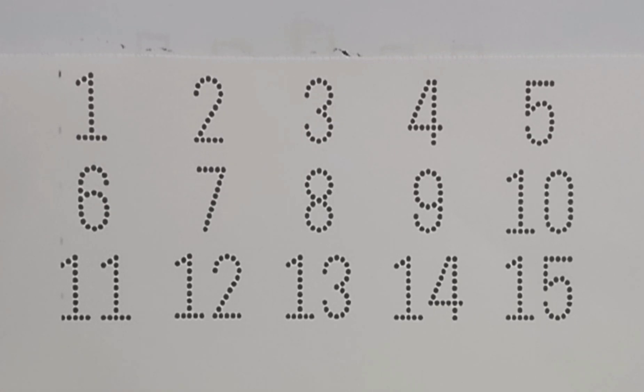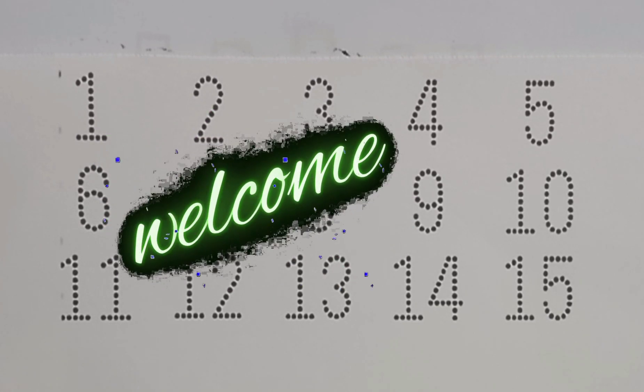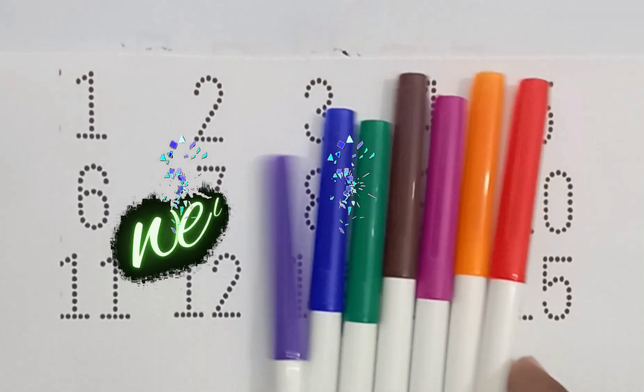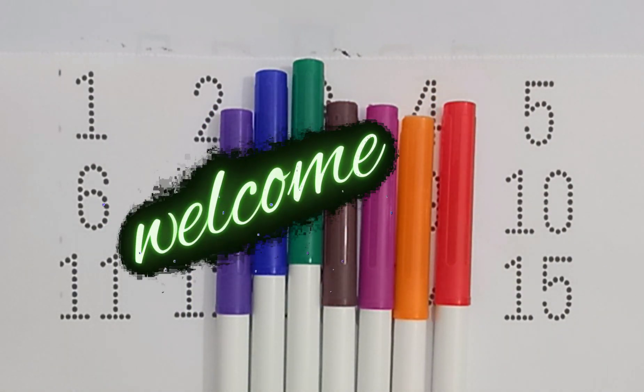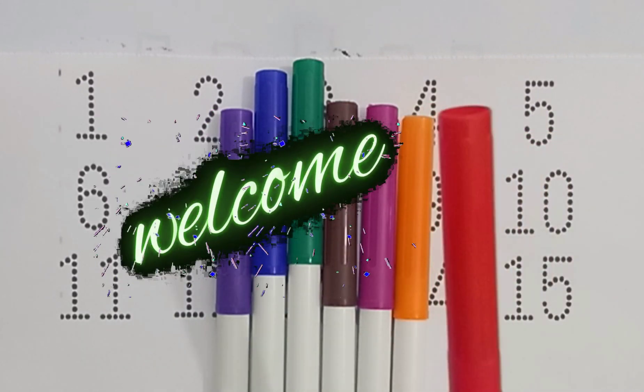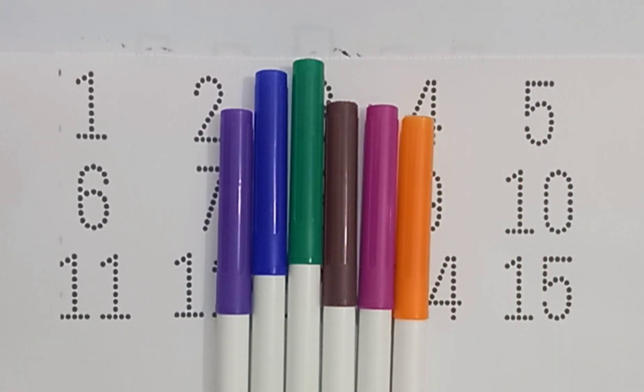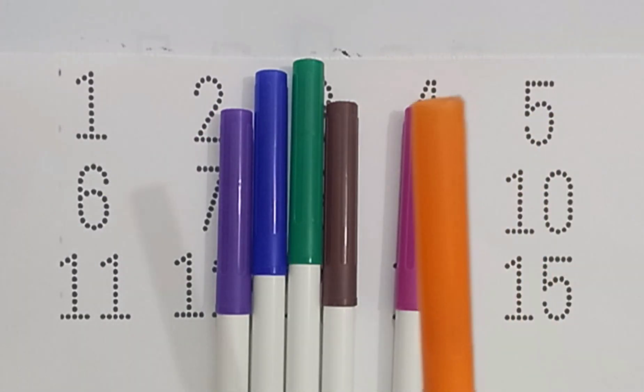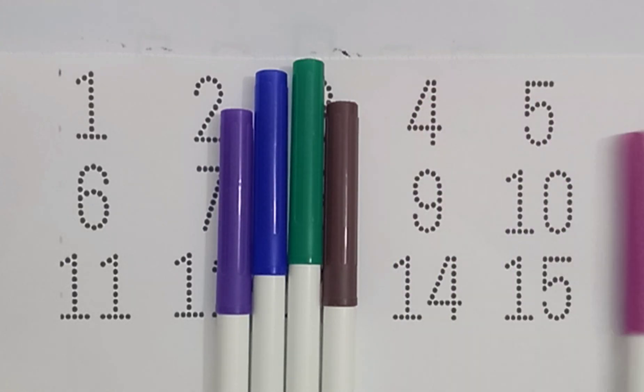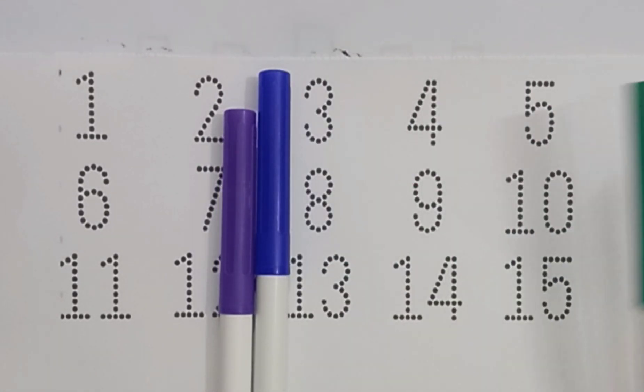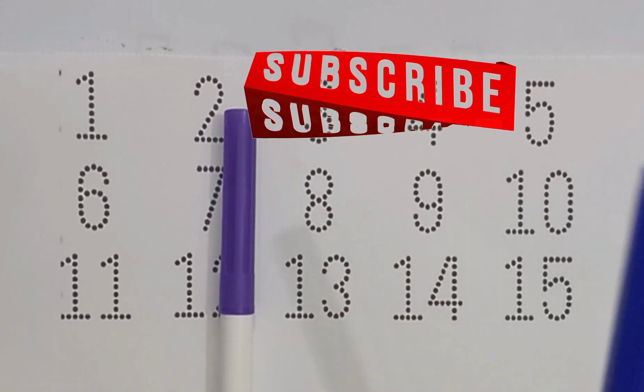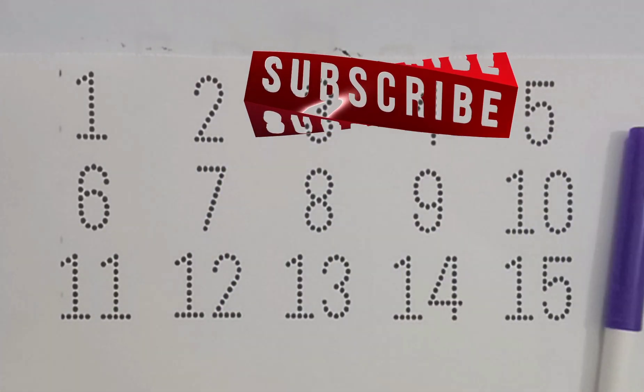Hello kids, welcome to my channel. Today you will learn color names and numbers. First color name: red color, orange color, red purple color, dark brown color, green color, blue color, and purple color.